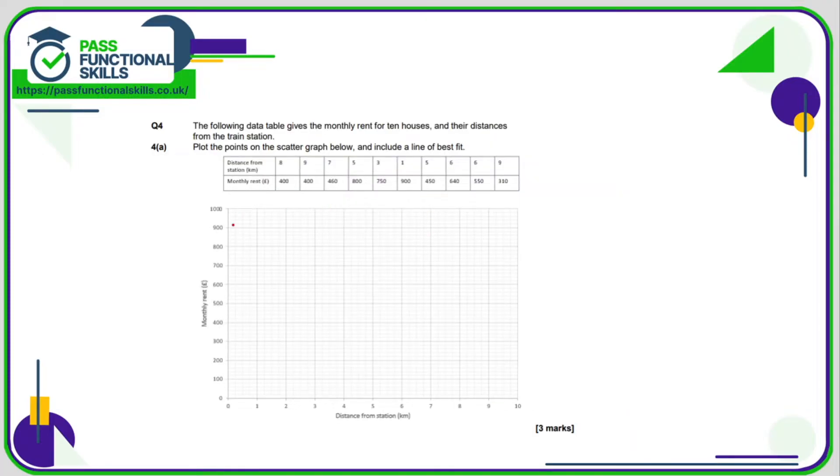Question four we need to do another scatter graph. We've got distance from station along the bottom, monthly rent up the side. So eight and nine is 400, seven is 460, five is 800, three is 750, one is 900, five is 450, six is 640, six is also 550, and nine is 310.